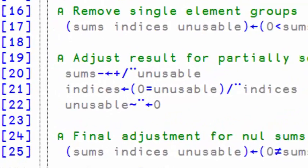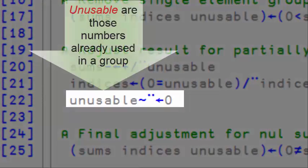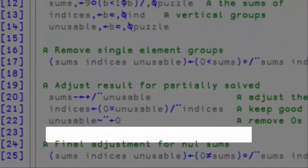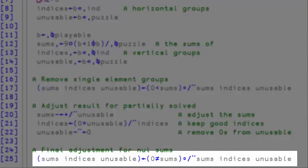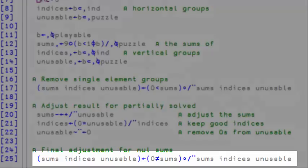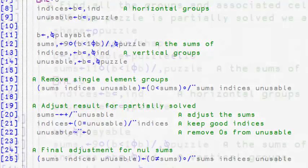And I remove any 0 from the unusable sets. Because some groups may be completely solved and their sum now equals 0, I remove them by keeping only those whose sum is not 0. And that's it.